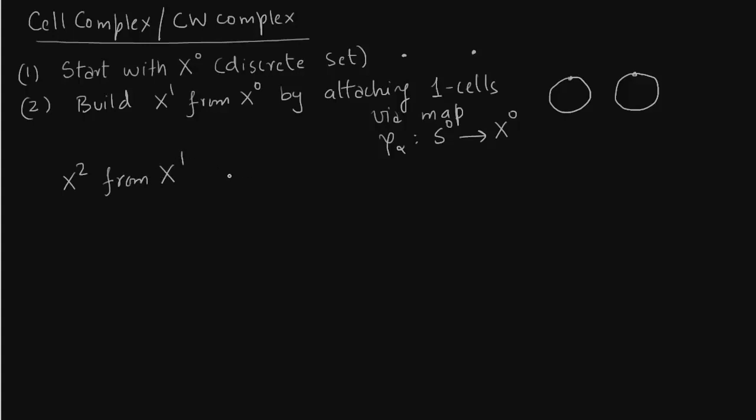Similarly we can build x2 from x1 using the attachment map. We take the boundary and attach it to the previous cell. So what I have done is I have taken x1, drawn it again from before, and then I attach a two cell to it. A two cell is nothing but a rubber sheet which I attach in here. So you see I have filled it up with a disk.